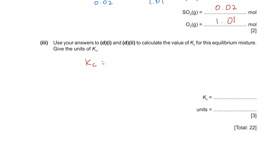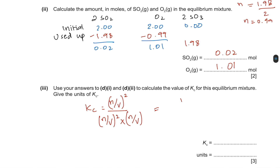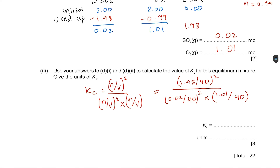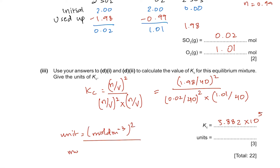To find Kc, we use concentration — moles divided by volume — not just moles. SO3 was 1.98/40 dm³, SO2 was 0.02/40 dm³, and O2 was 1.01/40 dm³, with their respective stoichiometric exponents. The calculated value of Kc is 3.882. For the units: the numerator has (mol dm⁻³)² for SO3, and the denominator has (mol dm⁻³)² for SO2 and (mol dm⁻³)¹ for O2. After cancellation, the units are mol⁻¹ dm³.